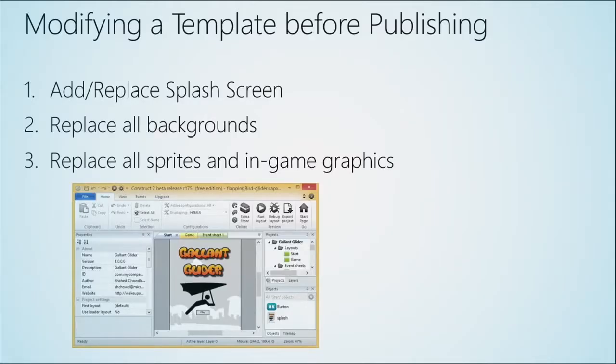What about modifying the template before you publish? You could publish the Flappy Bird template as-is, but it's obviously just a clone available for learning. The best way is to make it unique and make it your own. As you can see in my version called Gallant Glider, it's about a hang glider flying through the air avoiding obstacles - very similar to the Flapping Bird clone, which is itself a clone of Flappy Bird. All I did was replace all the backgrounds and graphics and change some behaviors to also track a high score.